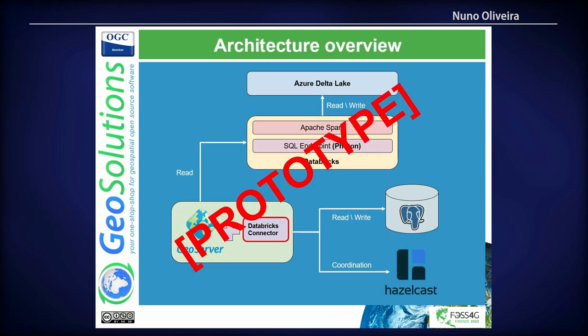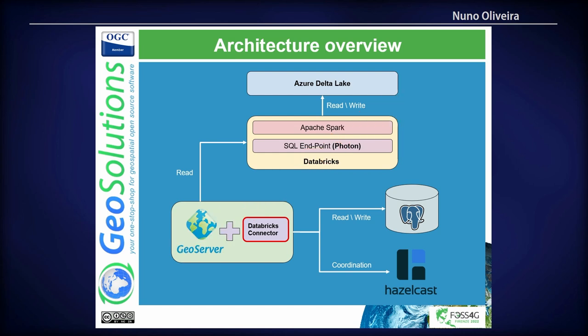This is still a prototype to be contributed to GeoServer. The architecture has an Azure Data Lake with Databricks in front, a GeoServer cluster, a Postgres database for caching, and Hazelcast for cluster coordination. We use the Databricks SQL endpoint: when we send an SQL query, Databricks translates it into an Apache Spark job that reads the required data from the data lake.